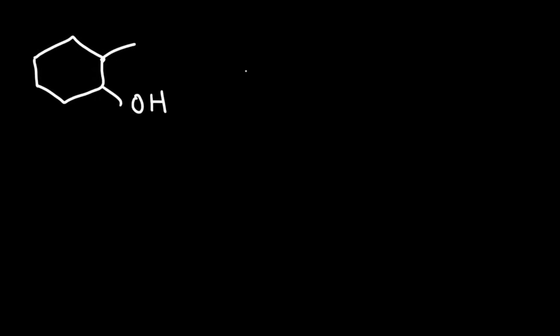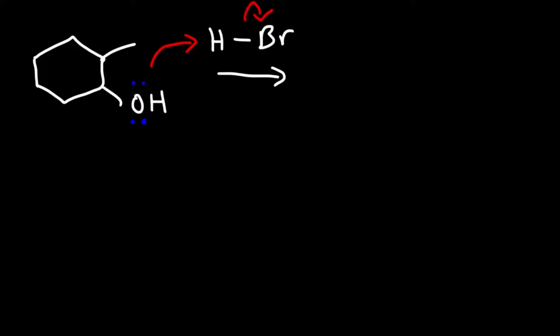Let's react 2-methylcyclohexanol with hydrobromic acid and predict the major product with a mechanism. The first step, as always when reacting an alcohol with an acid, is protonation — giving us a good leaving group.